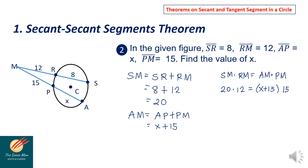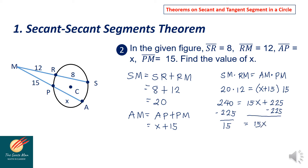So 20 times 12 equals 240. Distributing 15, we get 15X plus 225. To solve for X, subtract both sides by 225: 15 equals 15X. Divide both sides by 15, so X equals 1.